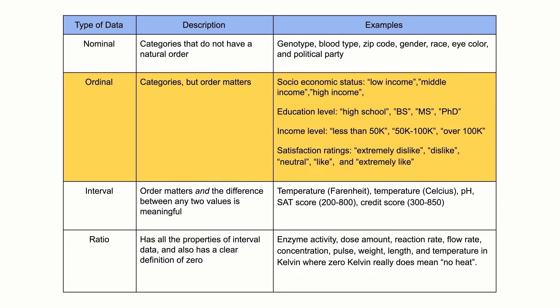Note: with ordinal data, the differences between adjacent categories do not necessarily have the same meaning. For example, the difference between two income levels — less than 50K and 50 to 100K — does not have the same meaning as the difference between the two income levels 50 to 100K and over 100K.